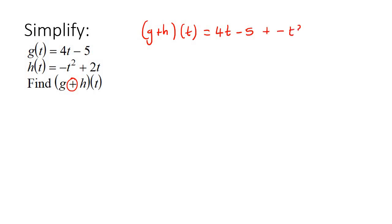Now you can just put the negative like that if you want to, that's fine. And so this positive and this negative is just going to make a negative. So let's just write that in the next step. And so now we just simplify. So 4t and 2t, that gives us 6t, take away 5, take away t squared. There we go.